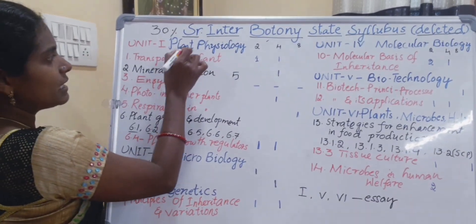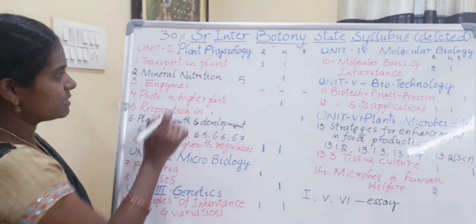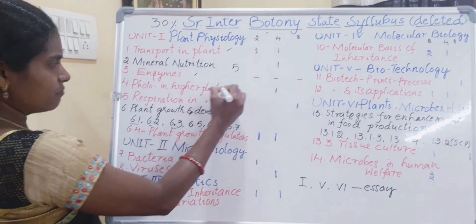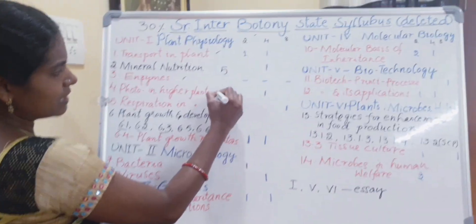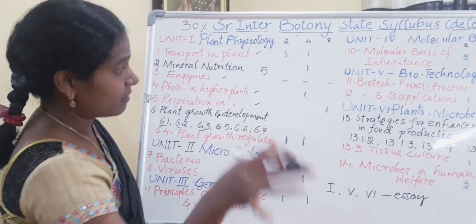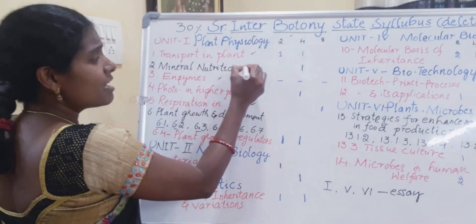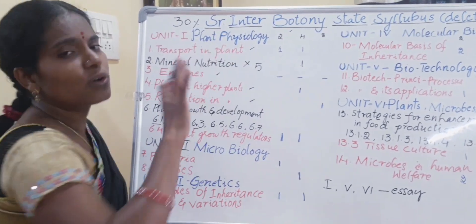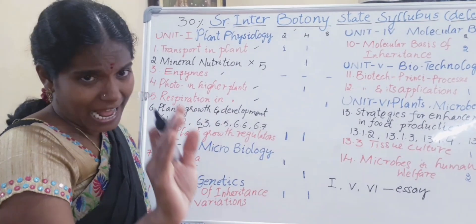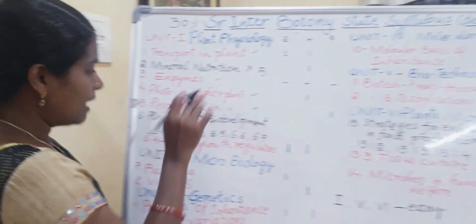The first unit is Plant Physiology. Under this there are six chapters. Transportation in Plants is as it is. Enzyme, Photosynthesis in Higher Plants, and Respiration in Plants are also retained. The only exception here is the second chapter, Mineral Nutrition, which is totally deleted. Second years, take note: Mineral Nutrition is totally deleted.